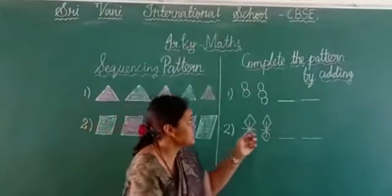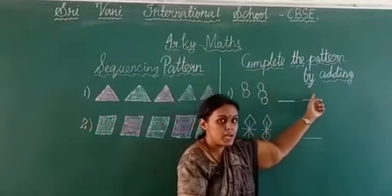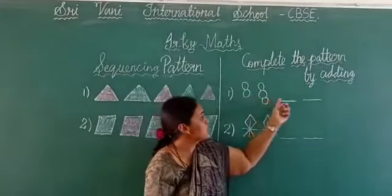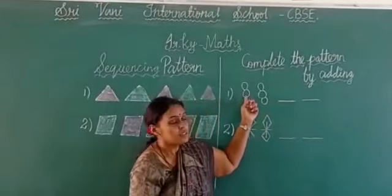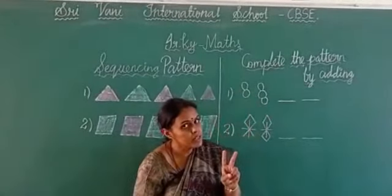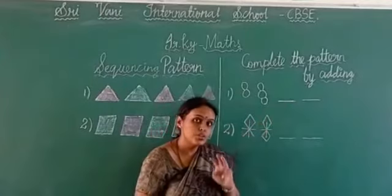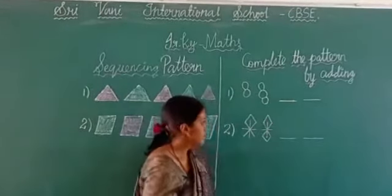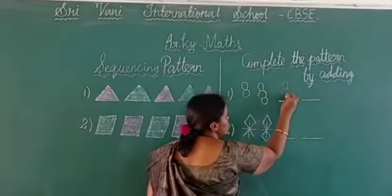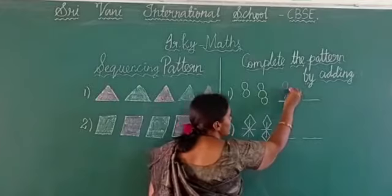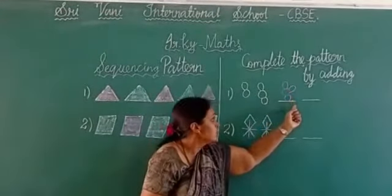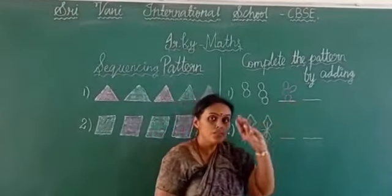Shall we move to the next topic? Next, we are going to see how to complete the pattern by adding. In the first one, we have to complete the given flower. The flower is given with only one petal. Next, the flower is added with two petals. Next, we are going to draw the third petal. Are you ready children? We are going to draw the third petal. Next, we are going to draw the fourth petal.